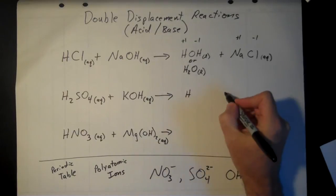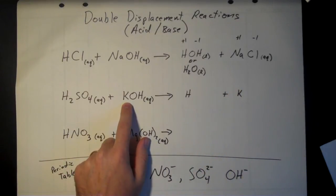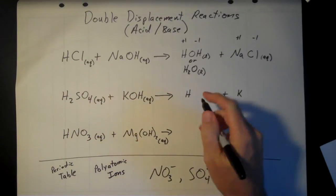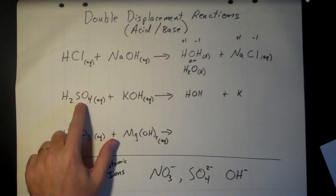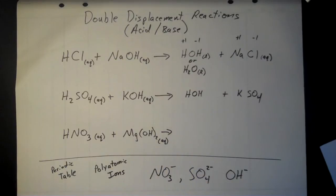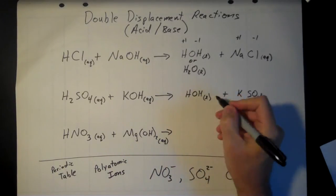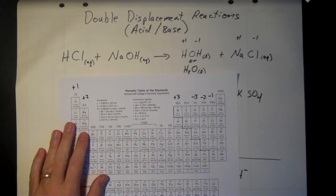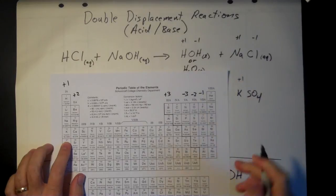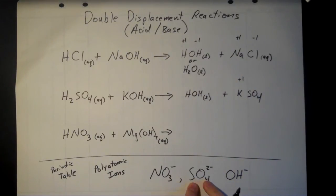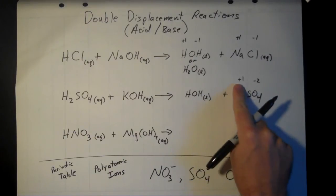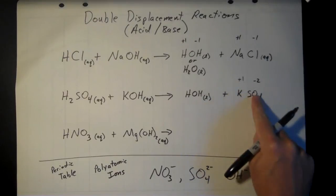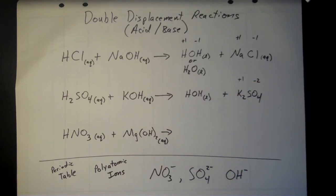Bring one hydrogen over to the product side and the potassium over. Swap the anions: the OH group goes with the hydrogen to make water — HOH or H₂O — and the sulfate ion SO₄ goes with the potassium. Potassium is in column one, so it's +1, and sulfate has a -2 charge. We crisscross: two potassiums and one sulfate, giving the formula K₂SO₄.